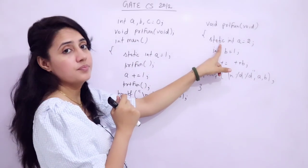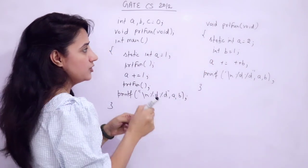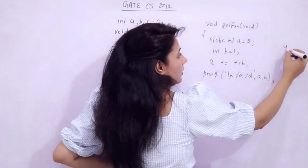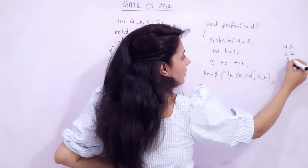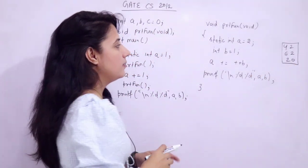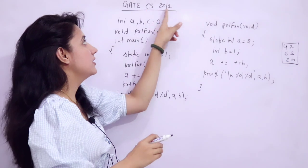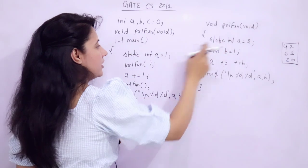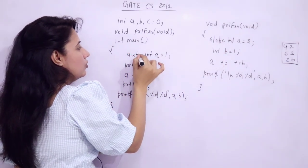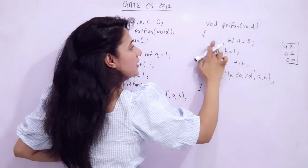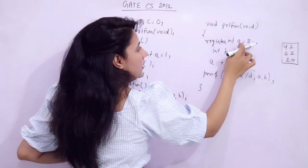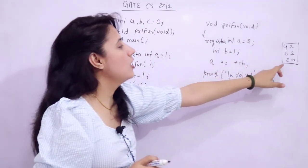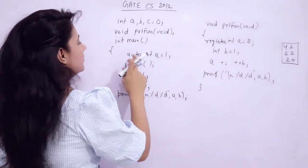When you are using static storage class, the answer of that question would be 4 2, then 6 2, and 2 0. But there was one more question — the code is the same, but in this Gate CS 2012 variant, line 1 is replaced by 'auto int a = 1' and line 2 is replaced by 'register int a = 2'. So now what output will you get?